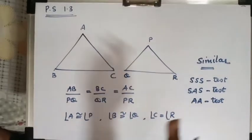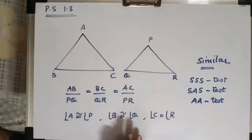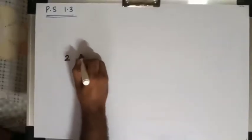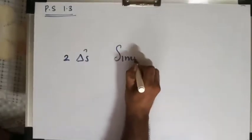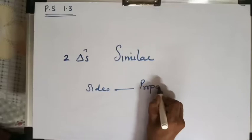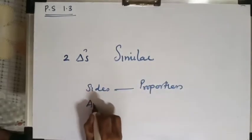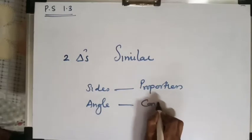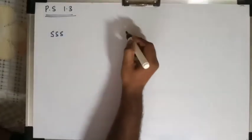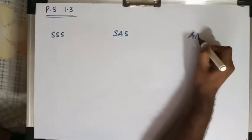This is what you have learnt in standard ninth, which is why I have not explained it in detail. To summarize: two triangles are said to be similar if their sides are in proportion and their angles are congruent. There are certain tests of similarity — SSS test, SAS test, and AA test.